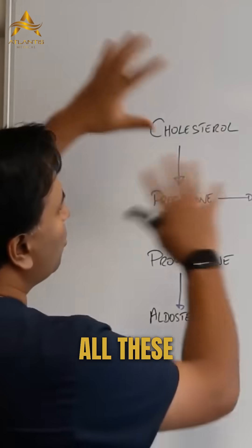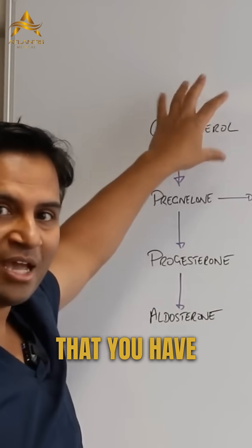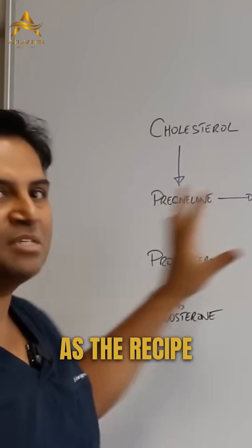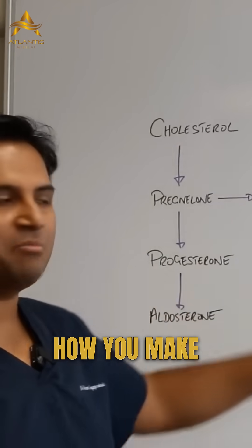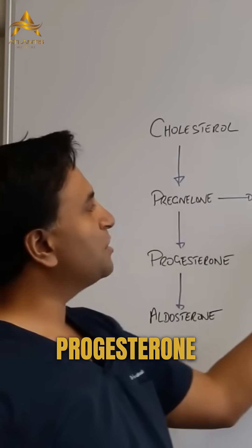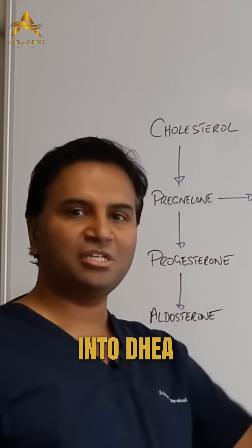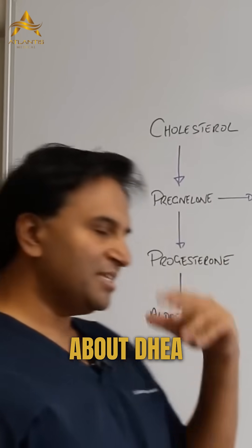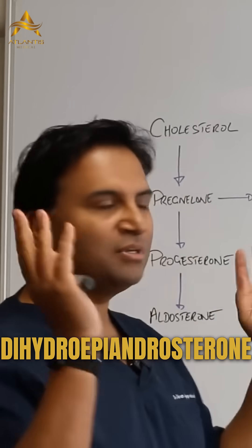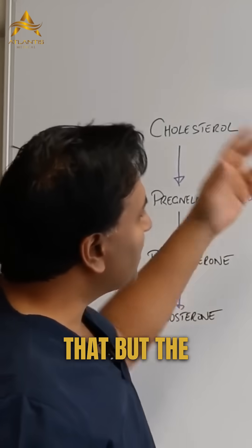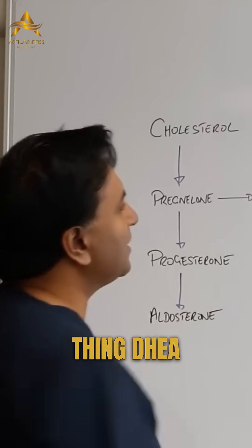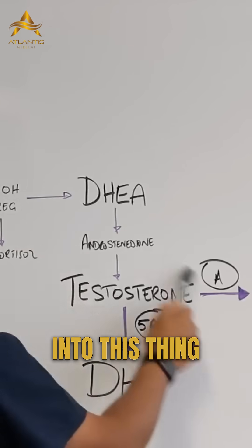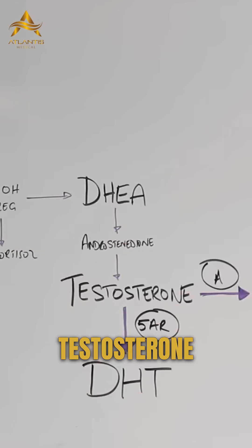So you can see all these things are really important, and you need cholesterol in order to make them. Think of this as the recipe guide for how you make these things. 17-hydroxyprogesterone converts into DHEA — a lot of you have heard about DHEA. DHEA stands for dehydroepiandrosterone — you don't need to remember that. But the important thing is DHEA converts androstenedione into testosterone.